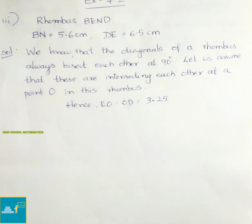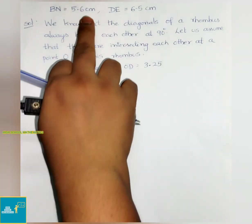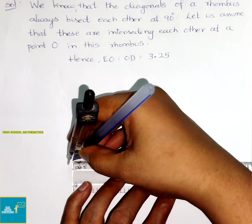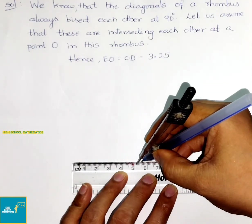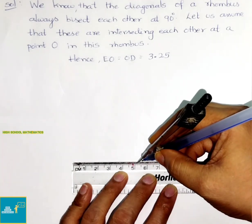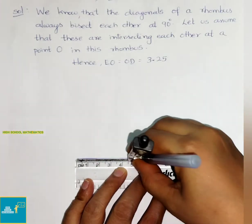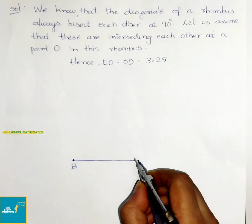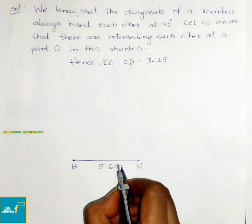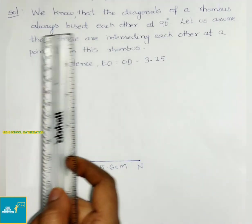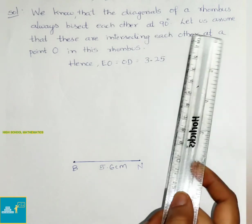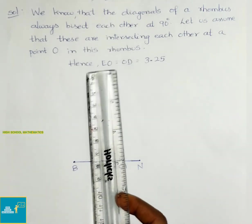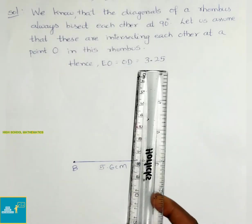Let us see the construction. First, draw a line segment BN of 5.6 cm. Mark 5.6 and join them, marking as BN with length 5.6 cm. We know that the diagonals of a rhombus always bisect each other at 90 degrees. Let O be their intersection point. Hence EO equals OD equals 3.25 cm (half of 6.5).